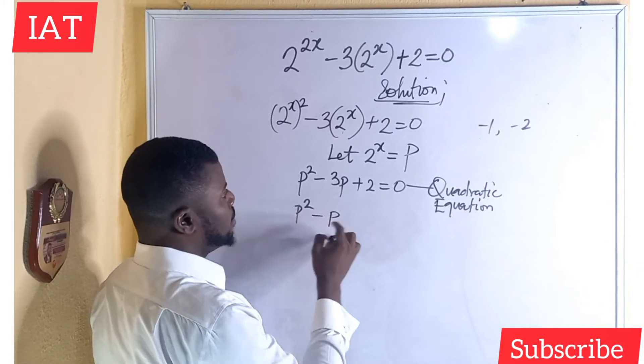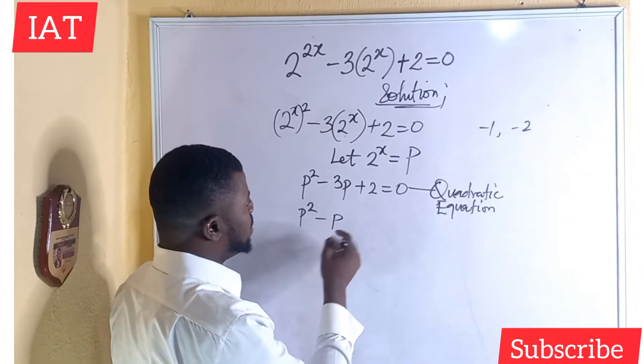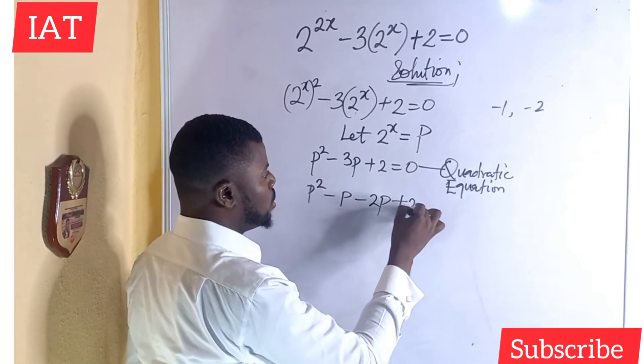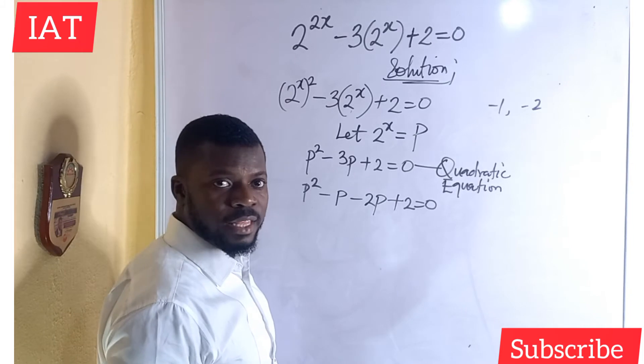Instead of 1p, I will have minus p minus 2p. This represents this expression, plus 2 equal to 0.